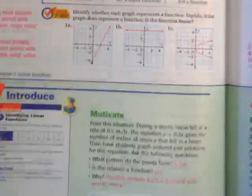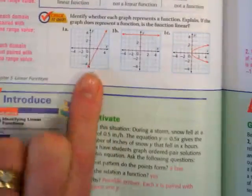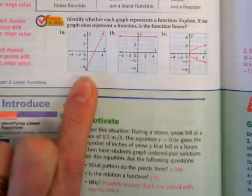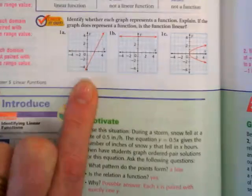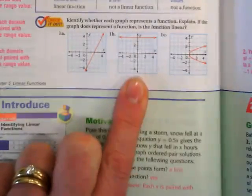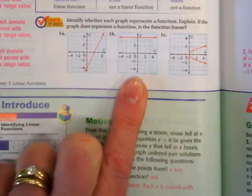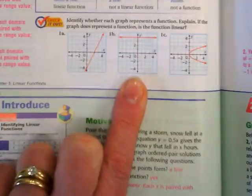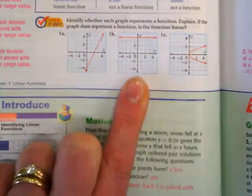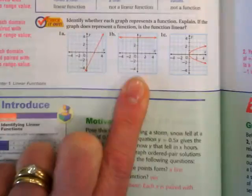So let's look at these three examples at the bottom of your page. Does this pass the vertical line test? So this is a function, is it a straight line? This is a yes and a yes. What about this one? Yes. Because it passes the vertical line test and it is a straight line, the difference with this is it has zero slope. Make sense?